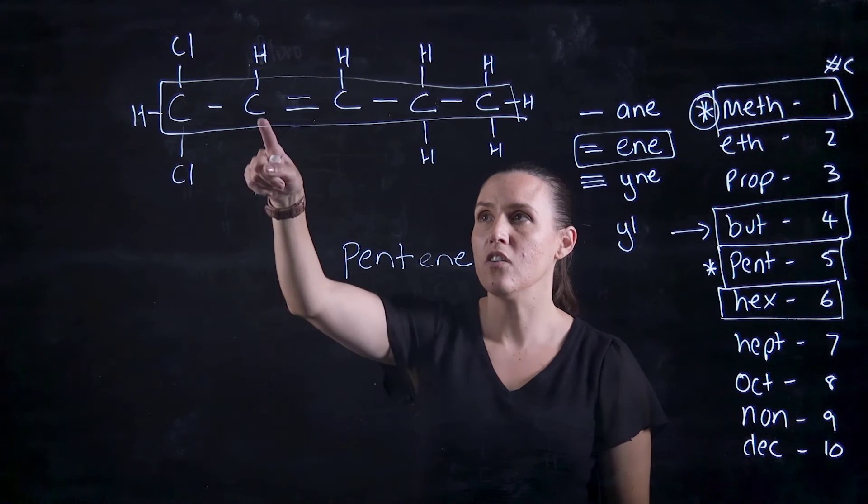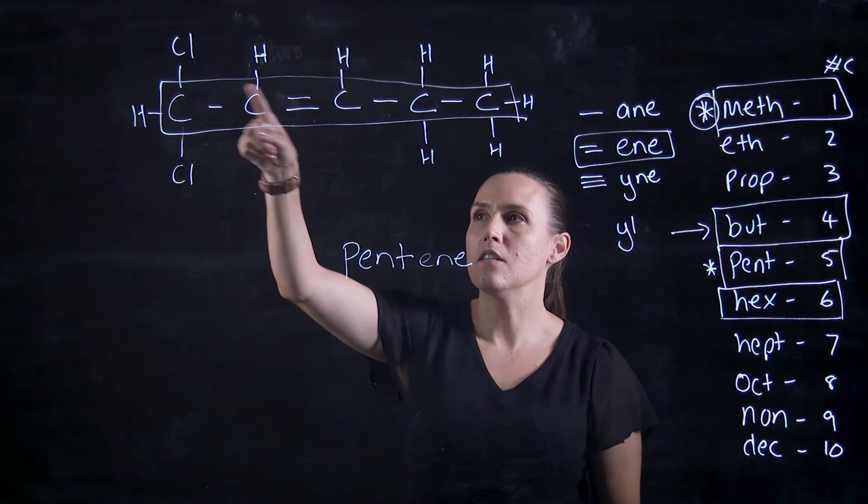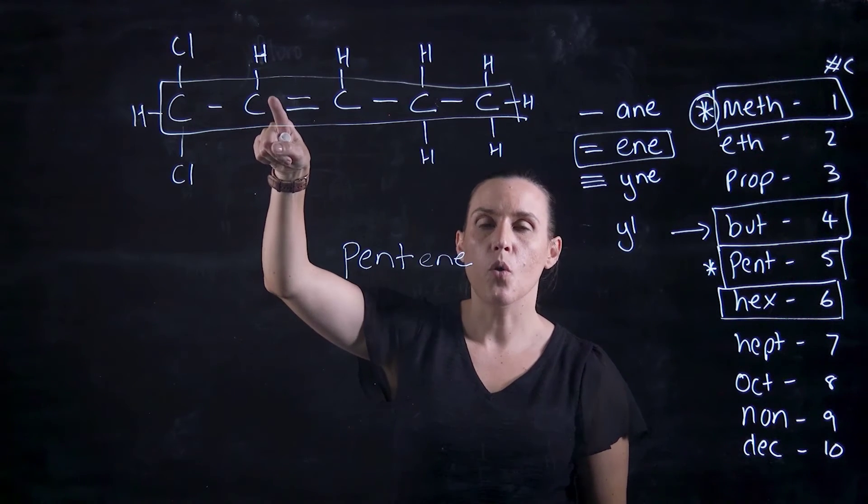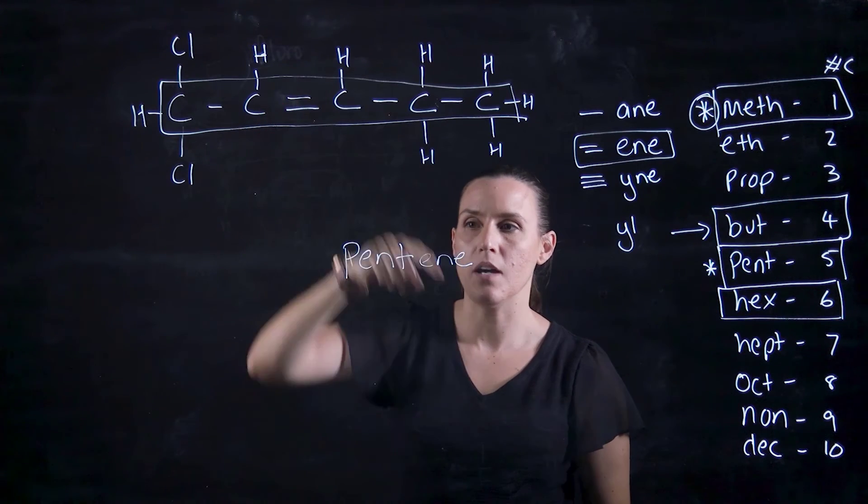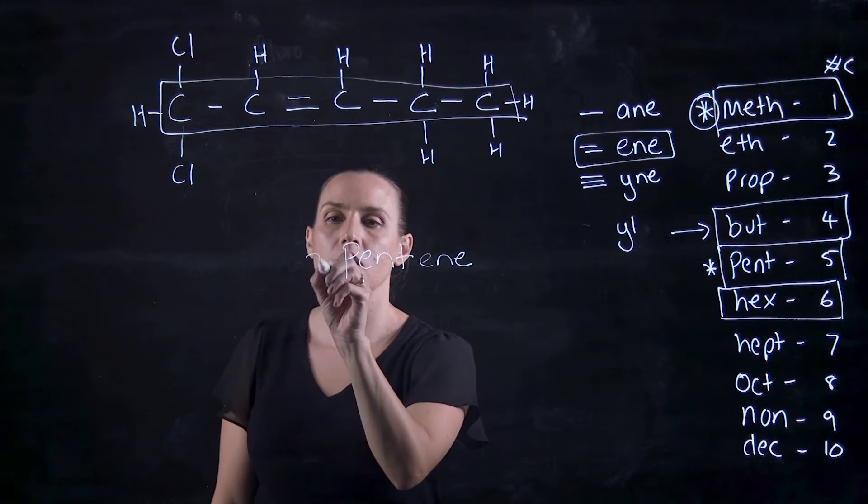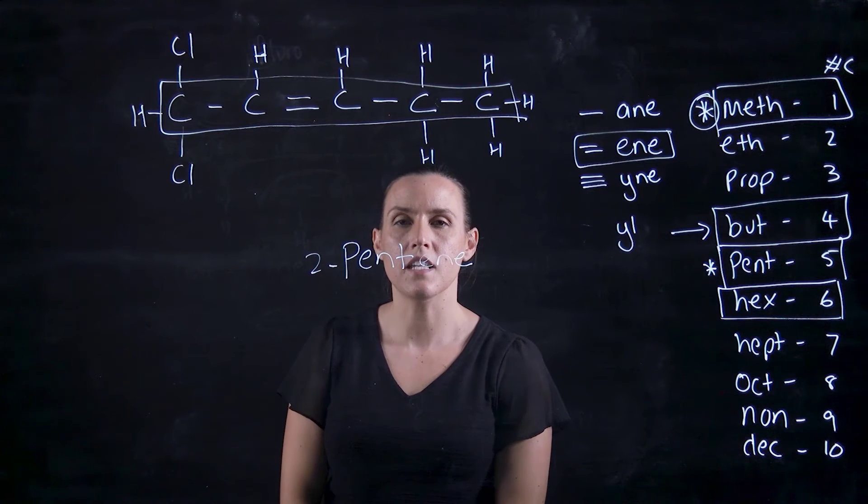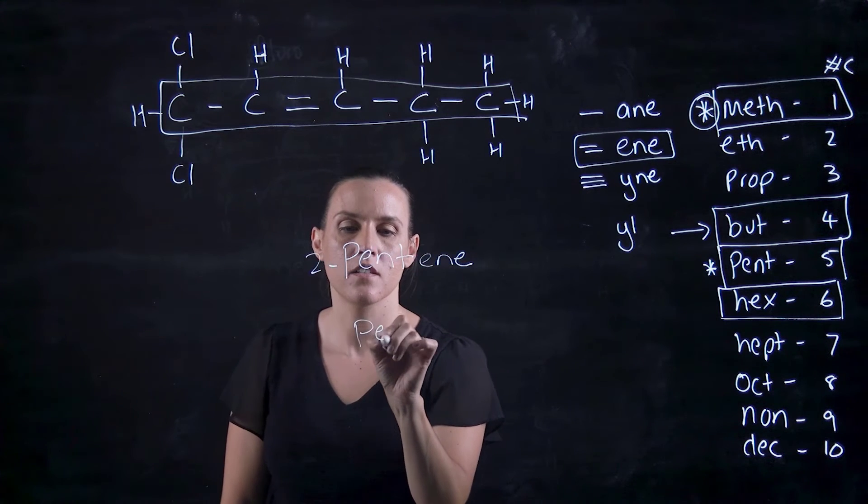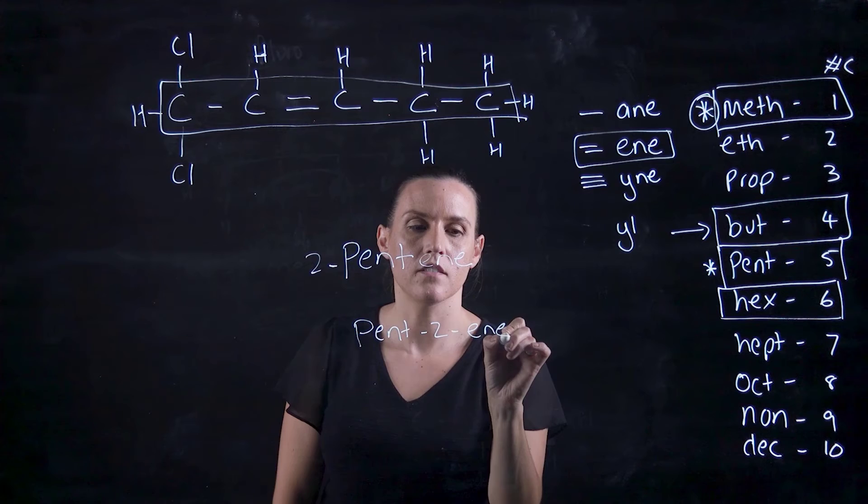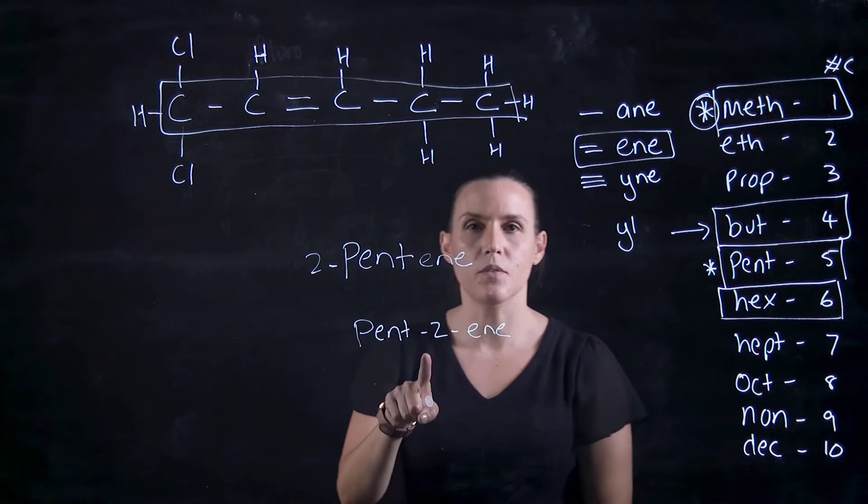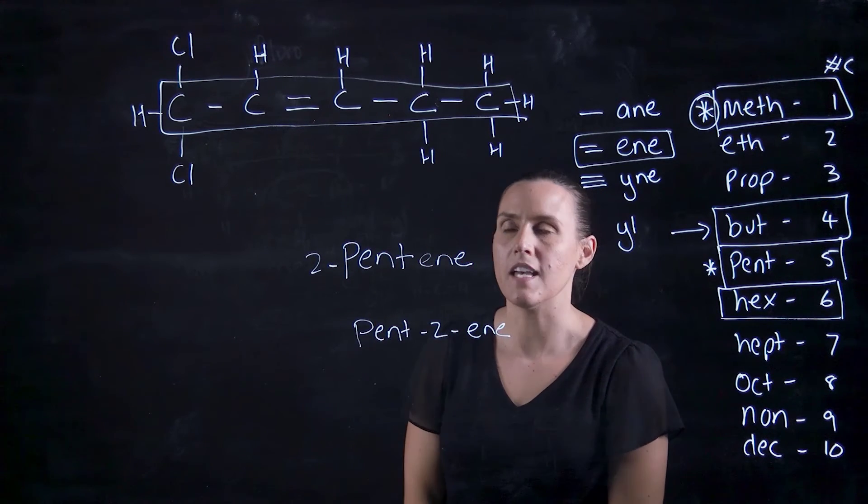Now because this is not on carbon one, it's actually on carbon two, we would need to label that one. So I can put the two out the front, 2-pent-ene, or I can do pent-2-ene. I kind of like this one, it looks better, but they're both the same.